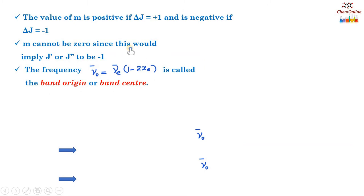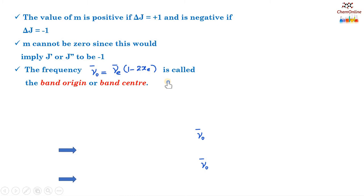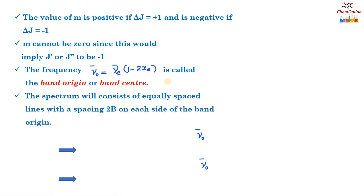The value of m is positive if delta j equals plus 1, and negative if delta j equals minus 1. Note that m cannot be 0, since that would imply j' or j'' to be minus 1. The band center ν̃_0 equals ν̃_e(1 minus 2x_e), and the rotational-vibrational spectrum of a diatomic molecule consists of equally spaced lines with spacing 2B on each side of the band center.